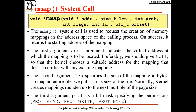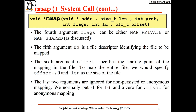The mmap call is used to request the creation of memory mappings in the address space of the calling process; on success it returns the starting address. The first argument ADDR indicates the virtual address — pass null so the kernel chooses a suitable address that doesn't conflict with existing mappings. The second argument len specifies the size in bytes; to map an entire file, set len to the file size. The third argument prot is a bitmask for permissions: PROT_READ, PROT_WRITE, or PROT_EXEC. The fourth argument can be MAP_PRIVATE or MAP_SHARED.